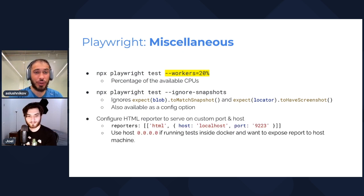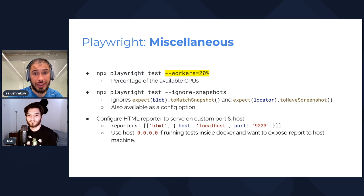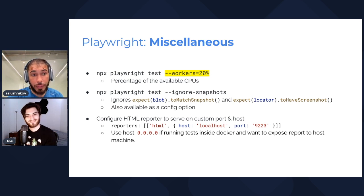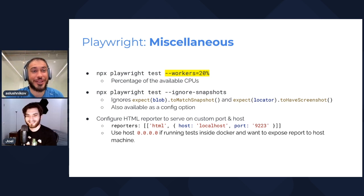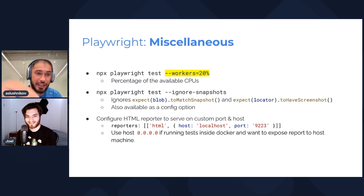The last miscellaneous option is configuring the bind location for the HTML report server. Currently it defaults to localhost on port 9223, but if you're serving from inside a Docker container you can now specify 0.0.0.0 as the host, so the report is accessible from your host system.